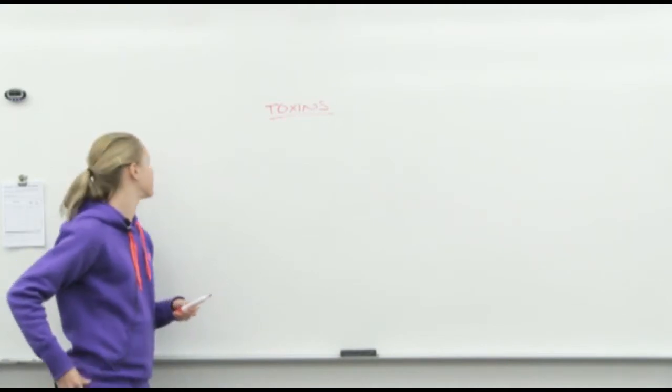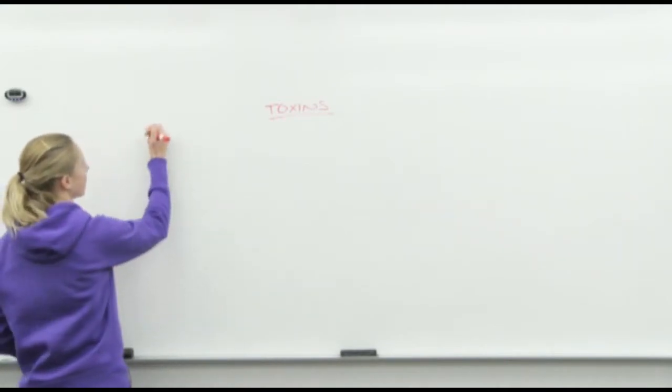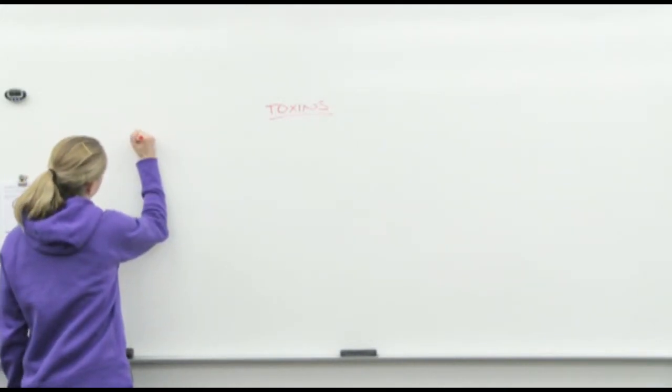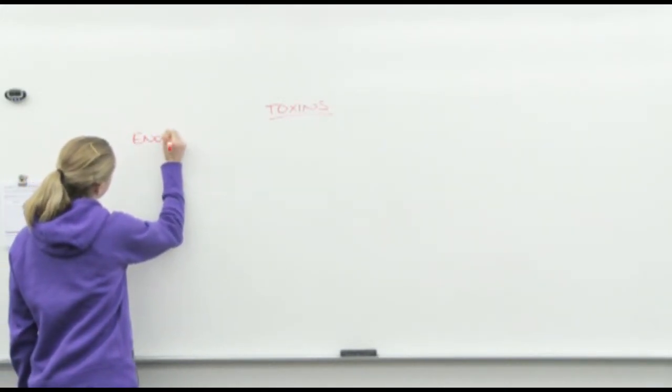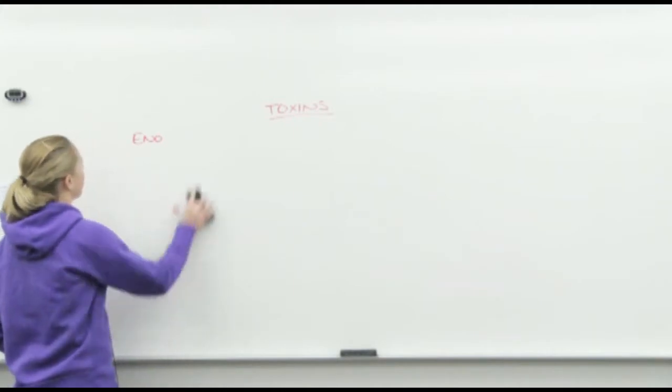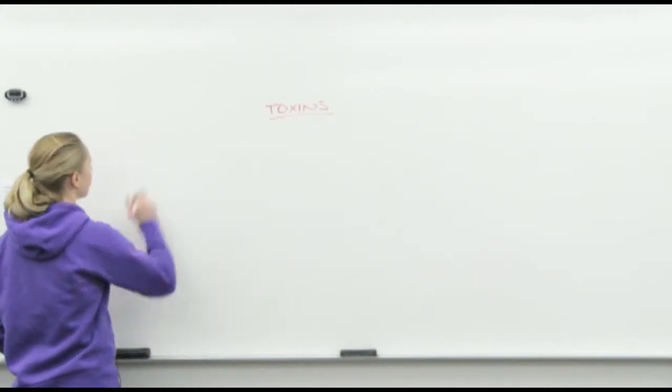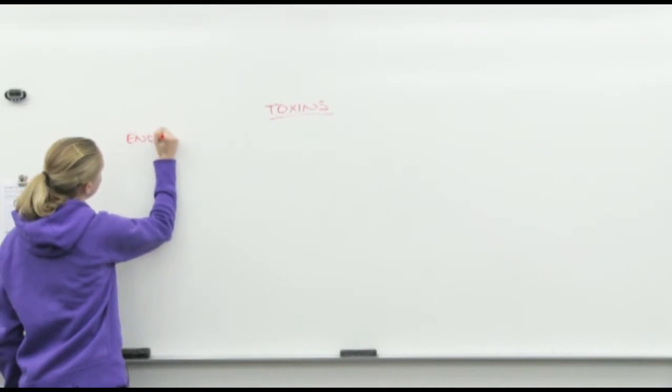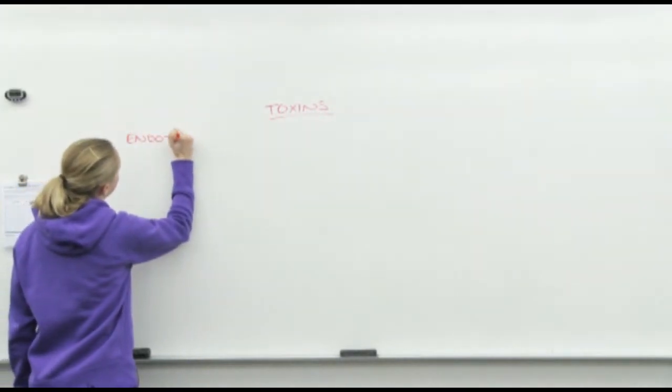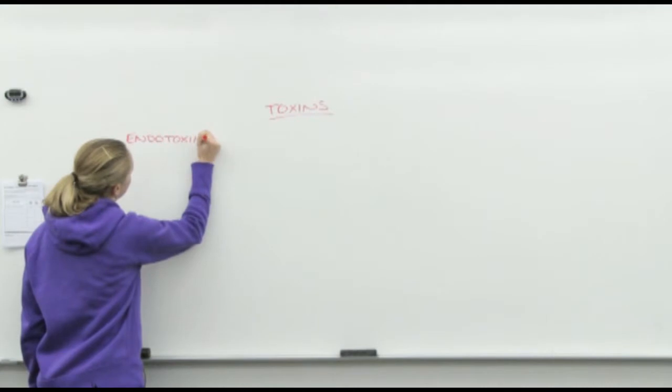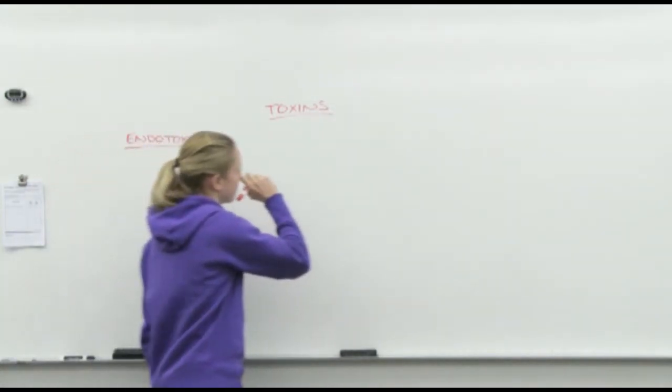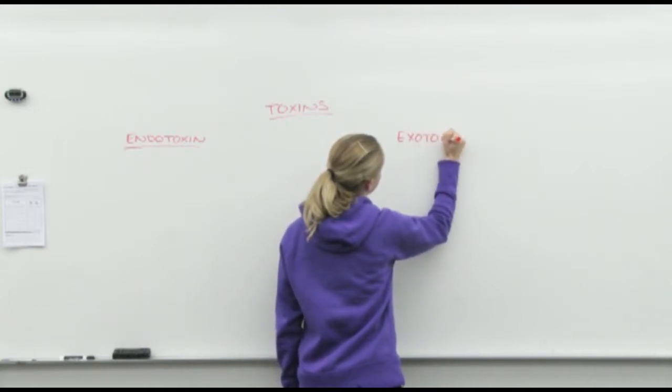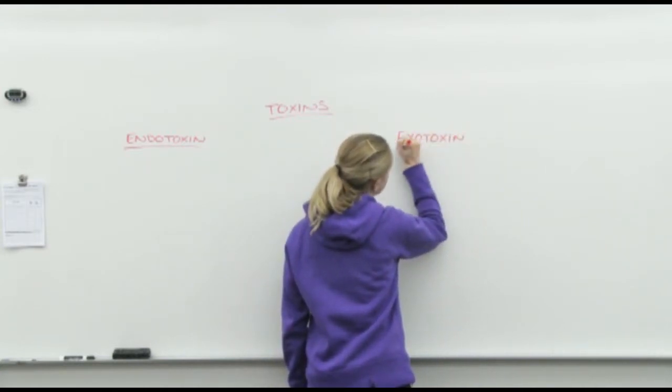There are two kinds of toxins: endotoxin and exotoxin. Not entero, that's different. Let's start with endotoxin.